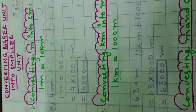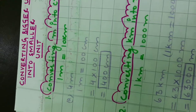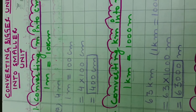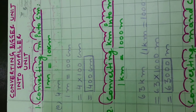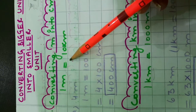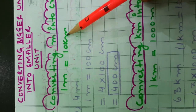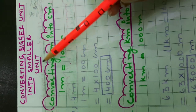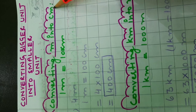Students, today I am going to discuss the conversion of units of lengths. The unit of length is meter, and we know that 1 meter is equal to 100 centimeters. Meter is the bigger unit and centimeter is the smaller unit. So, we will learn how to convert meter into centimeter.